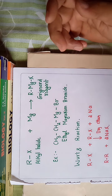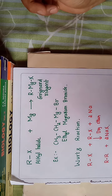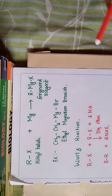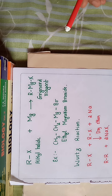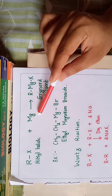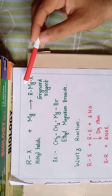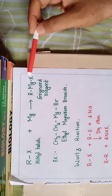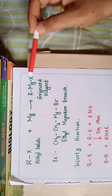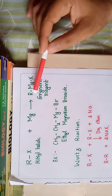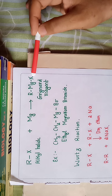Alkyl halides can generally be represented as RX, where R is the alkyl group and X is the halogen. When an alkyl halide reacts with magnesium, you get a product called Grignard reagent. The general formula of Grignard reagent is RMgX, meaning alkyl magnesium halide.